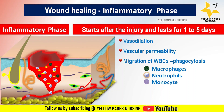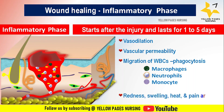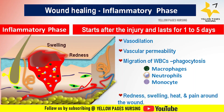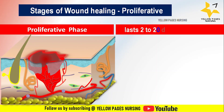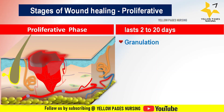These white blood cells, growth factors, and other factors cause redness, swelling, heat, and pain around the wound. Next is the proliferative phase, where new tissues form to replace the damaged or lost tissue. This phase lasts for 2 to 20 days.